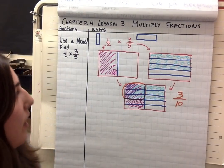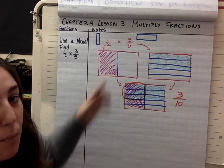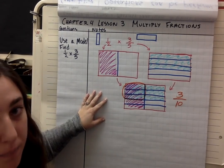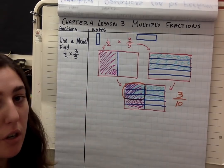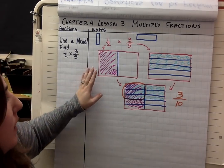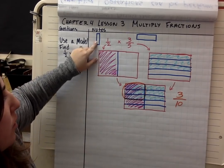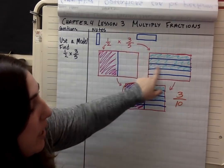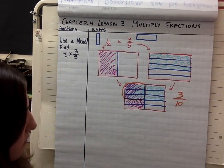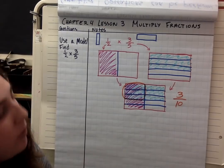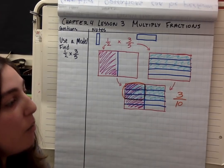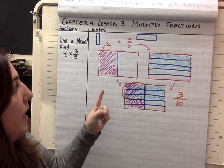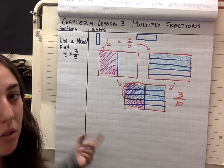What we just did was multiply 1 half times 3 fifths using an area model. If you want to use an area model for future multiplying fractions problems, please do so like this — make sure you draw the bars one way for one fraction and another way for the other fraction. Now we're going to learn a different strategy: instead of using an area model, we're going to use an equation.